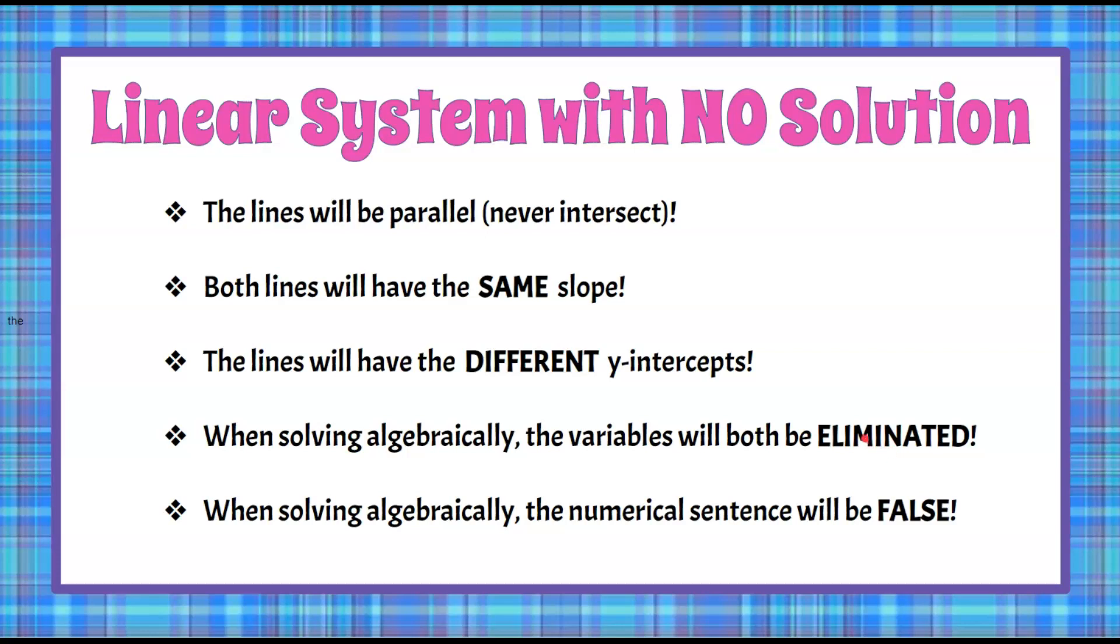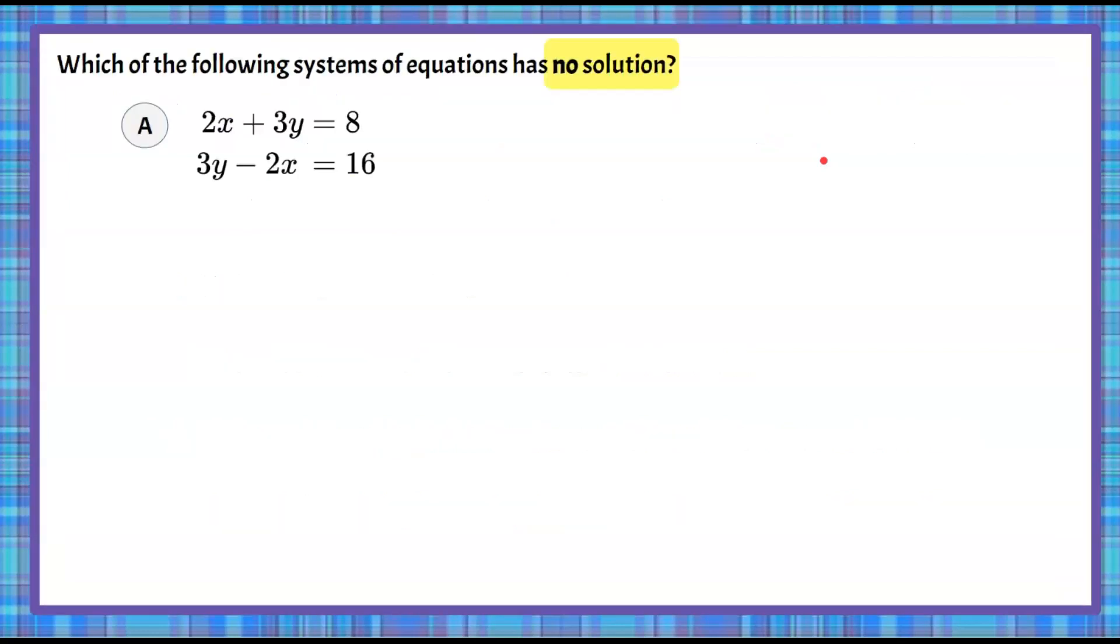Now that we have reviewed what a linear system with no solution would look like, let's go through and solve each of our choices. There are other ways you could do this. You could graph it. You could put them all in slope-intercept form. I am actually just going to go through and solve because they're all set up perfectly for elimination, except with a couple changes.